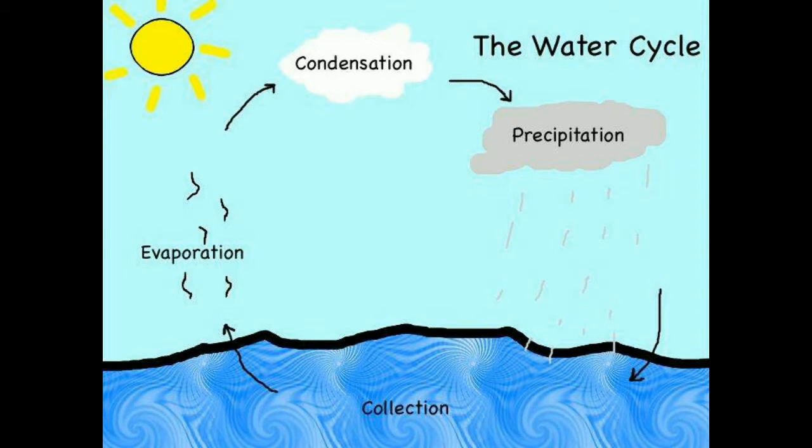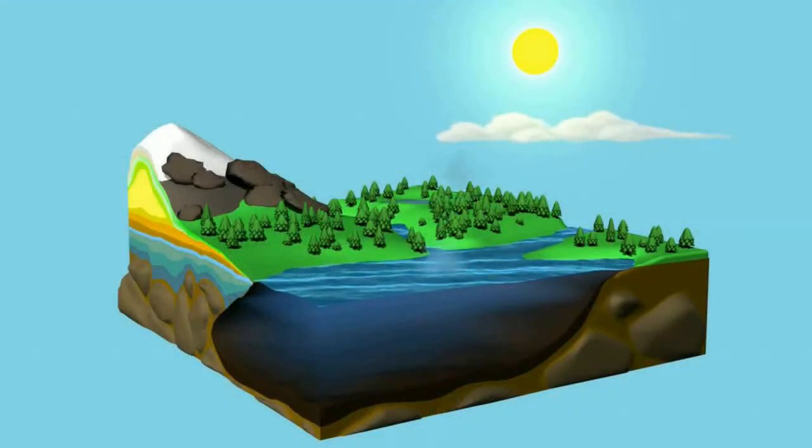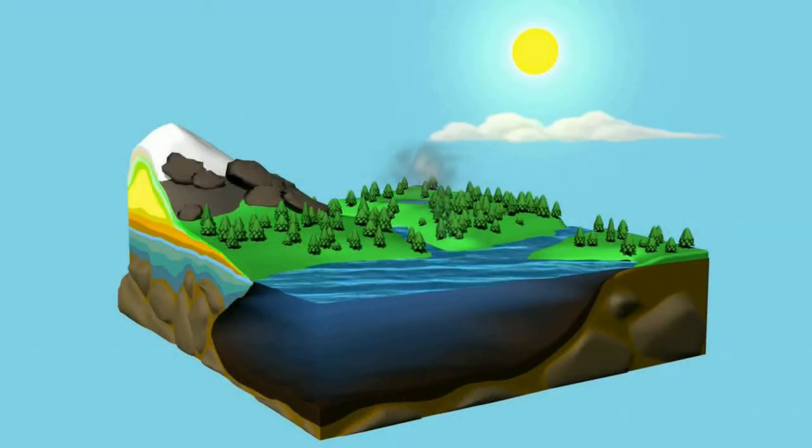There are four major steps to the water cycle. Evaporation is when the sun heats up water in lakes, oceans, and rivers and turns it into vapor or steam. After it's transformed into vapor or steam, it goes into the air.